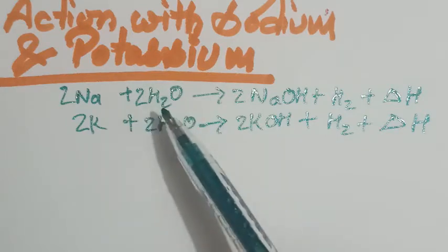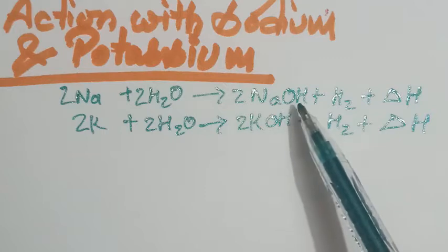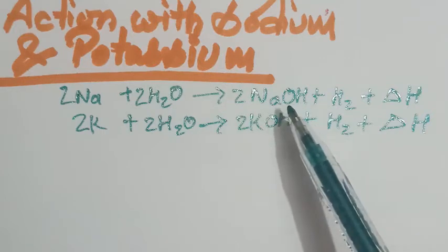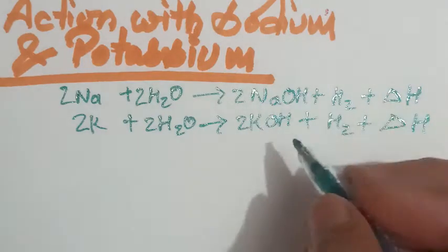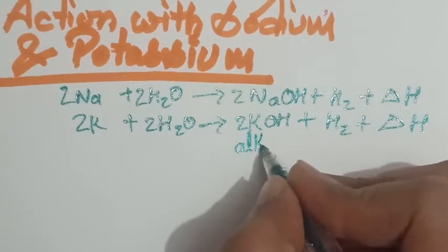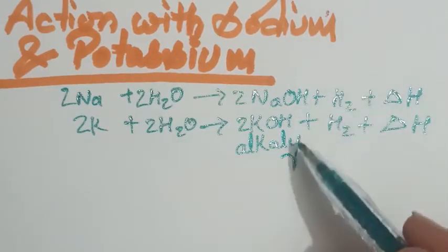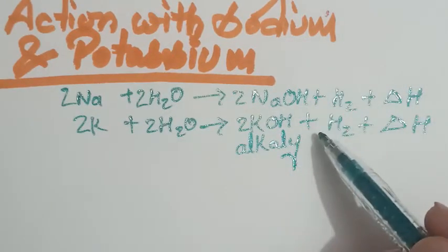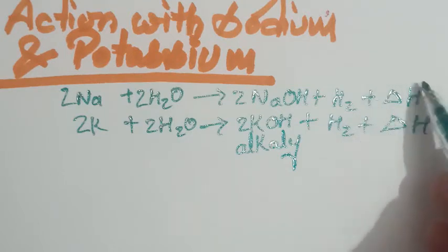they form their respective hydroxide - hydroxide means base or alkali type ki base - and they are water soluble base, that is why these are alkalis. They form their respective alkali. Along with this they also liberate out hydrogen gas, and a heavy amount of light and heat is also formed, that is denoted by delta H.